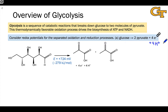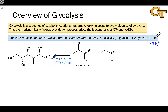This is a thermodynamically favorable process. If you look at the delta G for the process under standard conditions, it's negative 279 kilojoules per mole — very exothermic or exergonic. If you think about this as a redox half reaction, more specifically an oxidation half reaction, the oxidation potential, which we label as E, is 724 millivolts.